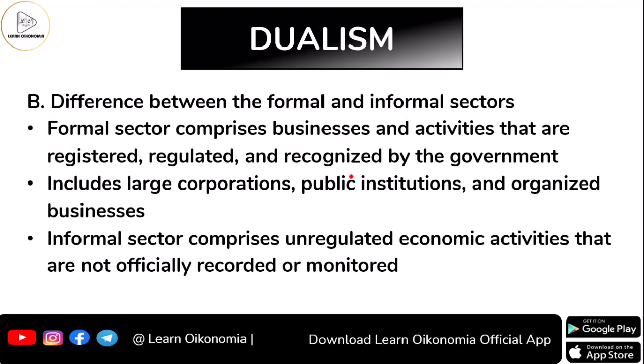Moving to the next type of dualism: the difference between the formal and informal sector. Looking at employment, the formal sector consists of enterprises and business activities that are registered with the government. It is regulated and recognized by the government, subject to rules, regulations, and laws. Big corporates, corporations, businesses, public institutions, and government institutions are identified as organized. The formal sector is also known as the organized sector.